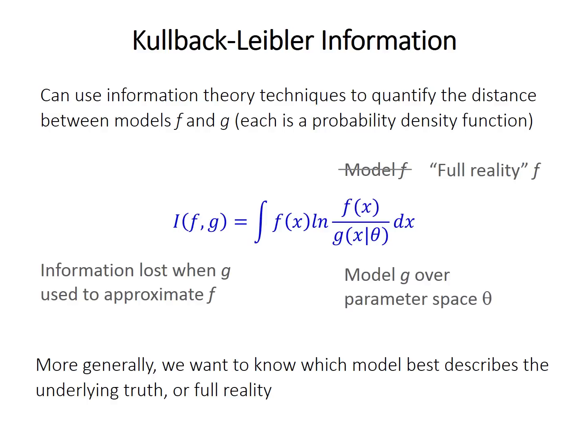More generally, we actually really want to know which of our candidate models that we're looking at best describes the underlying truth, what's often called full reality. So F is actually full reality, it's not a model. And G is one of our models. We're comparing multiple models to see how well they approximate full reality, basically figuring out which one loses the least information when you're approximating reality.